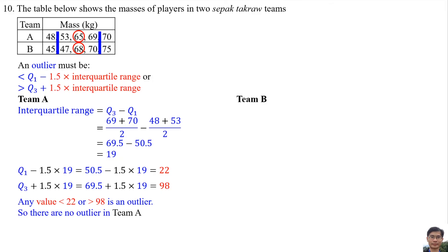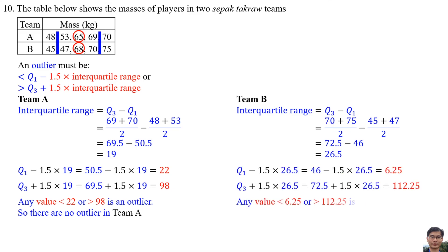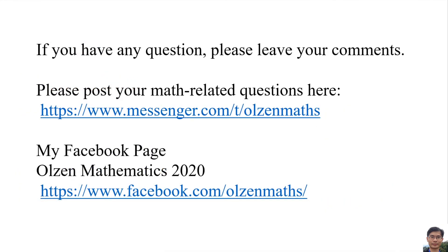Team B: The interquartile range is 26.5. Any values less than 6.25 or more than 112.25 is an outlier. So there are no outliers in Team B. If you have any questions, please leave your comments. Thank you very much.